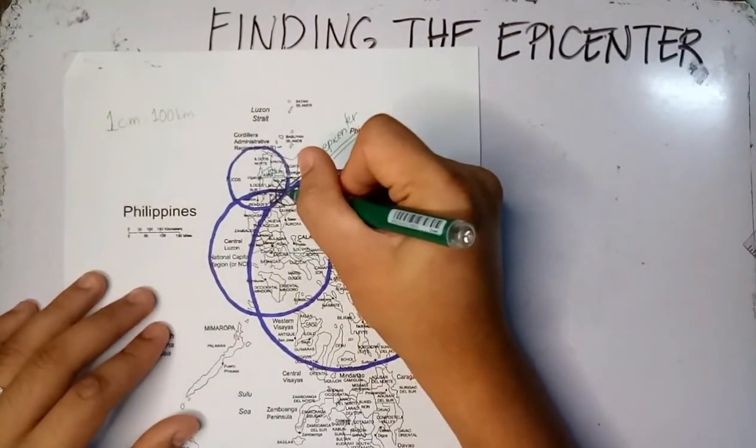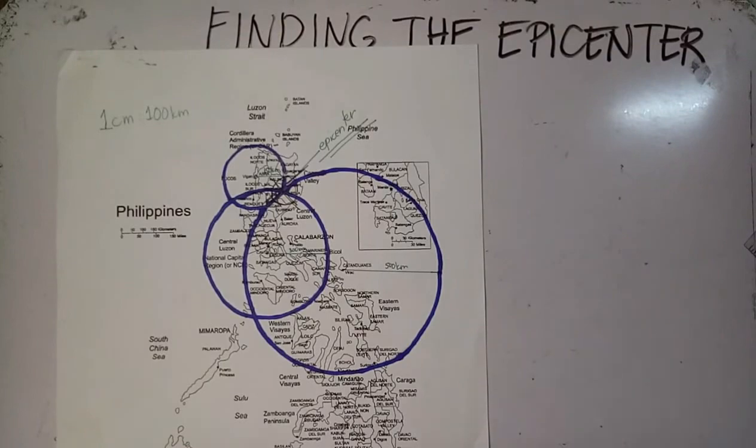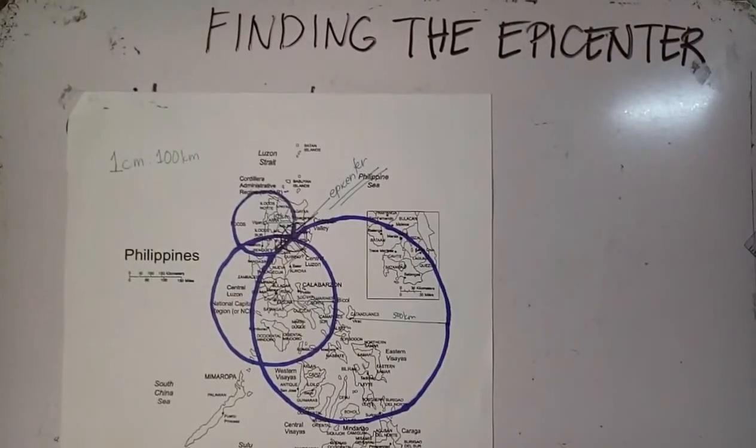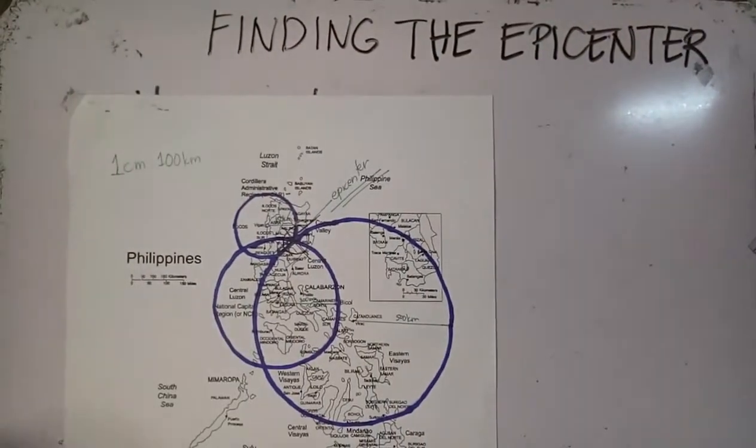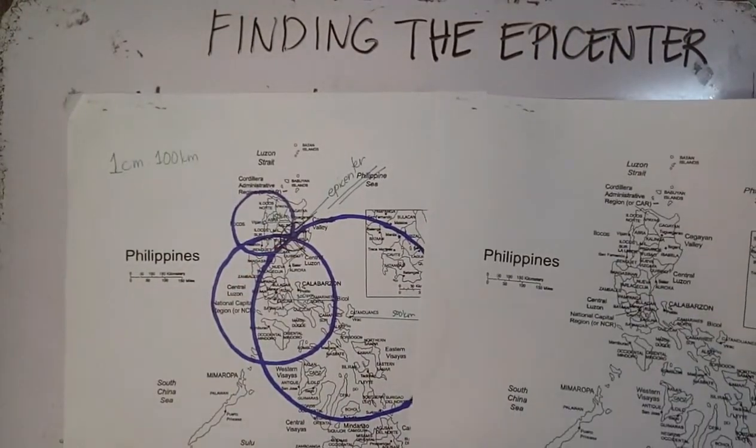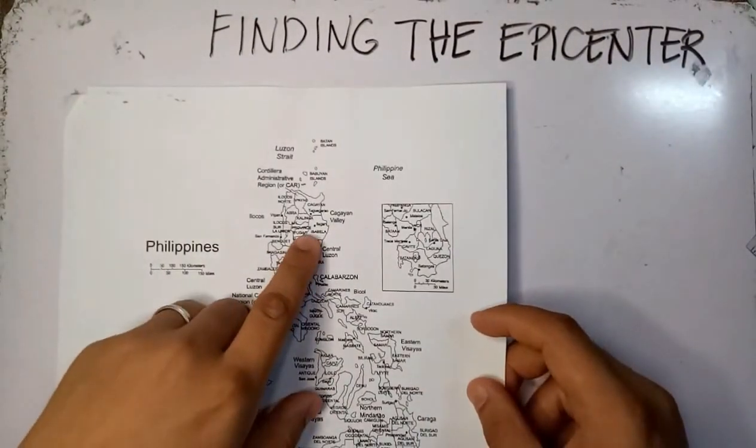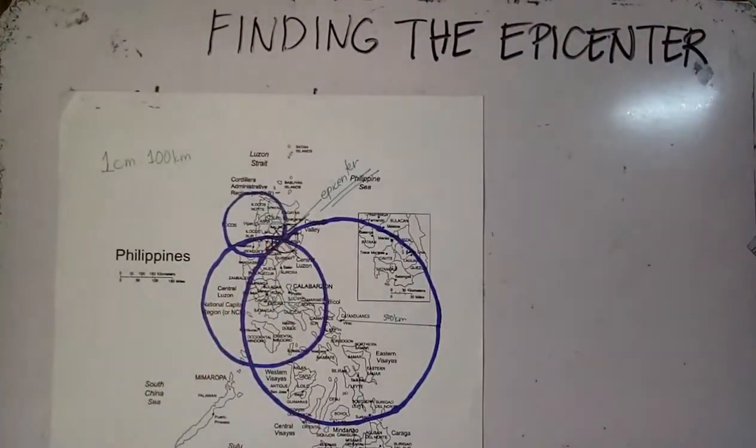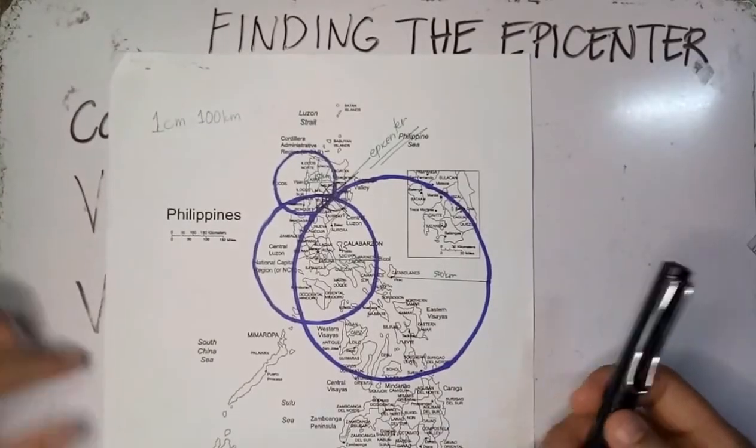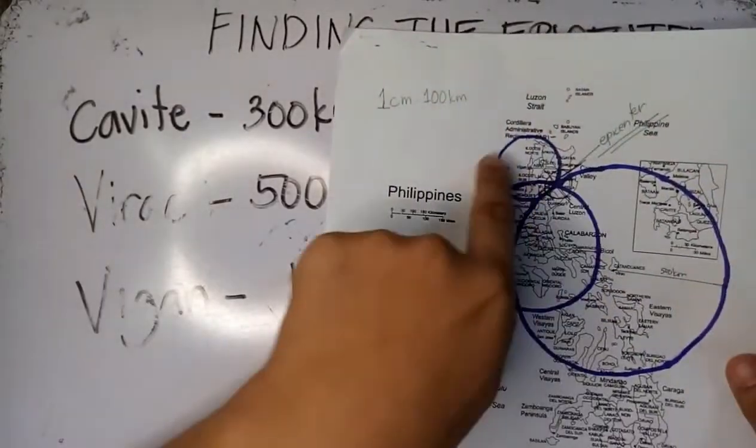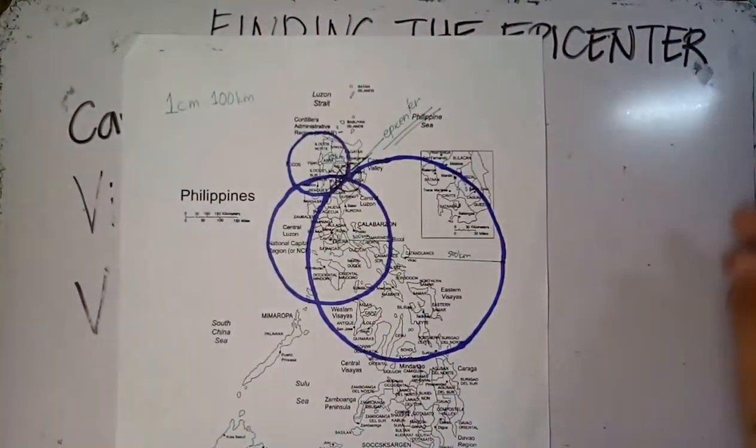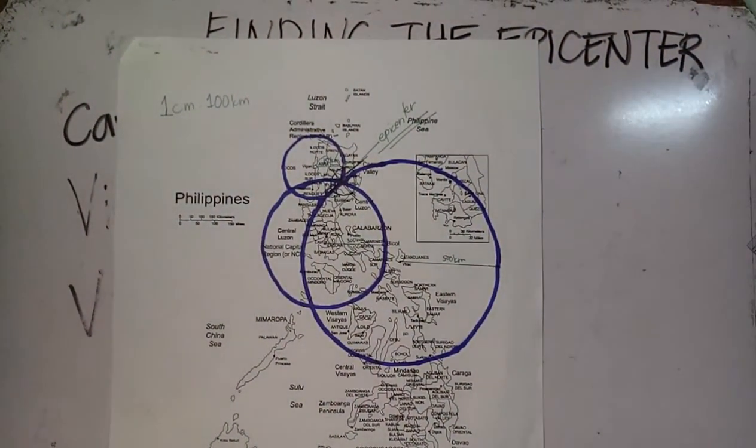Our epicenter lies in Isabela. Let us see if it is in Isabela. Here, this one: Ifugao, Isabela. Therefore, between the three stations, the epicenter of an earthquake lies in Isabela. That is what's called the triangulation method. Bye!